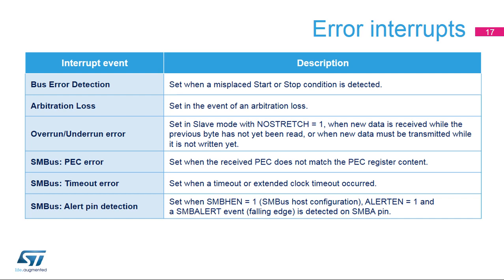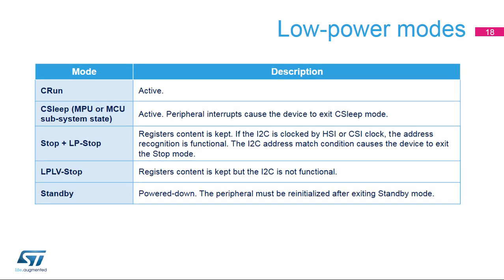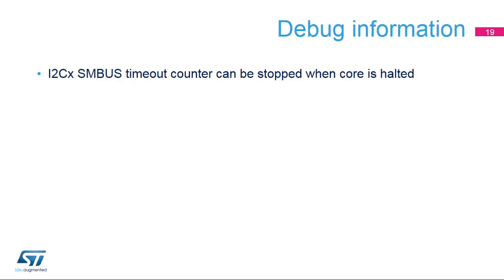Here is an overview of the I2C instance status in specific low-power modes. The I2C peripheral is active in CRUN and C-SLEEP modes. In STOP and LP STOP modes, the peripheral registers content is kept, and if clocked by HSI or CSI, address recognition is functional. An address match causes the device to exit STOP mode. In LPLV STOP mode the peripheral is no longer functional but registers content is kept. In STANDBY mode the peripheral is powered down and must be reinitialized after exit. A debug bit is available to stop the SMBus timeout counter when the core is halted.